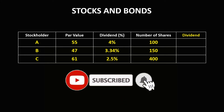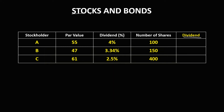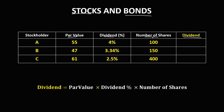Welcome to MathStorya. Today's topic is finding the dividend for stocks and bonds with a given par value, dividend percentage, and number of shares. To find the dividend, we use this formula: par value times the dividend percentage times the number of shares.